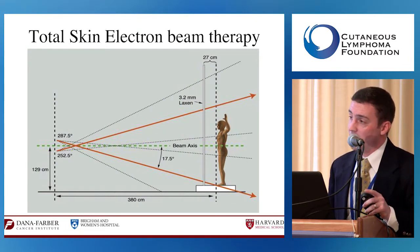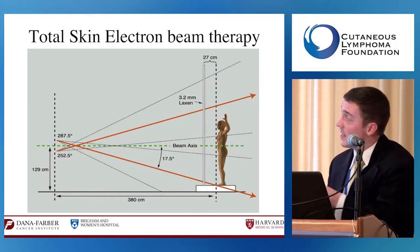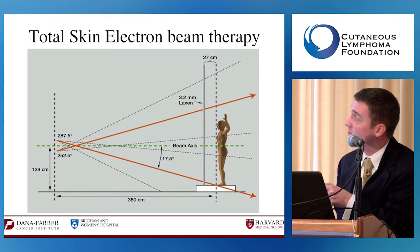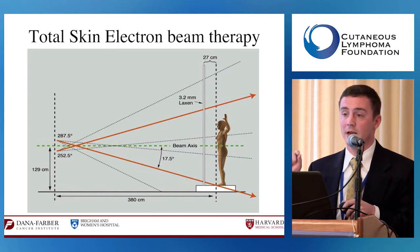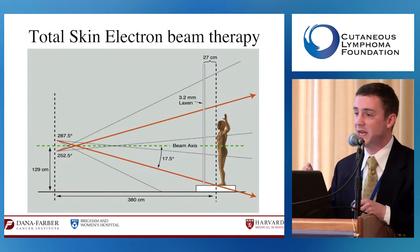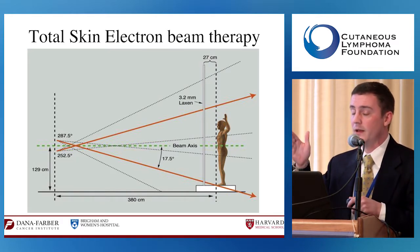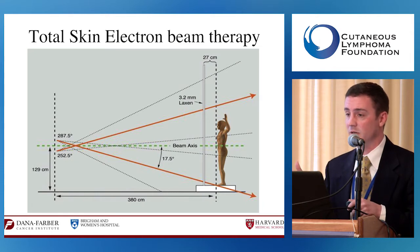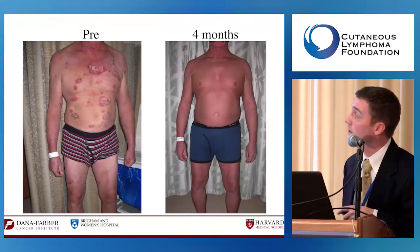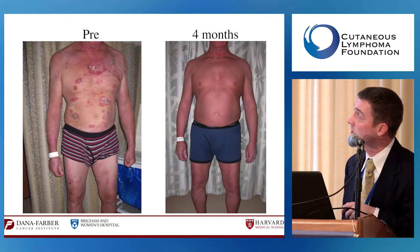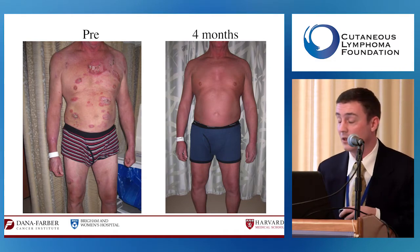Total skin electron beam puts the linear accelerator farther away from the patient so the electrons spread out, delivering a dose of radiation to the whole surface of the skin. Electrons by their nature cannot penetrate more than about five centimeters into tissue, which makes it ideal because it mitigates damage to internal tissues. We have an example of a patient with multiple thick plaques who, four months later, had a complete response.